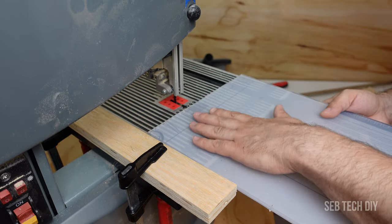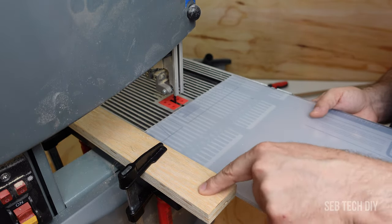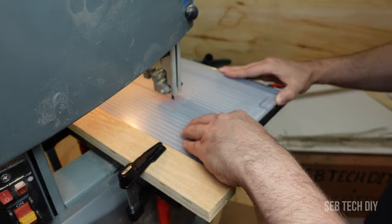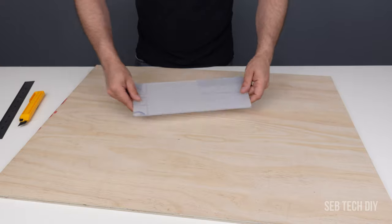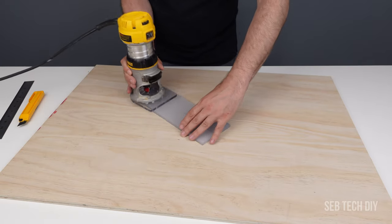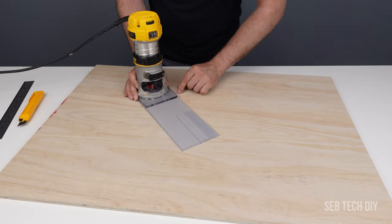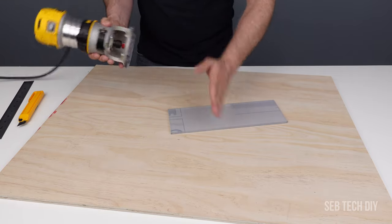I use my band saw for this task with a guide set at four inches from the blade. Now that my lexan piece is cut, it is the same width as my original router base.